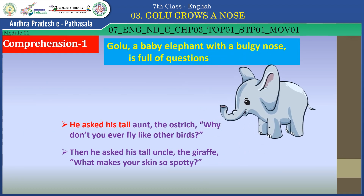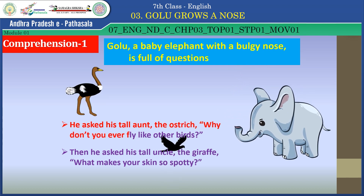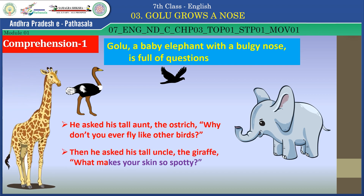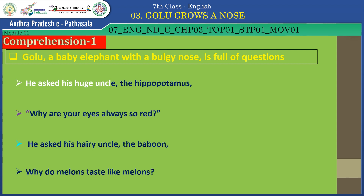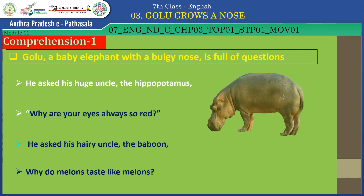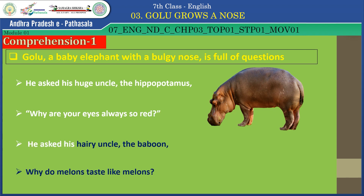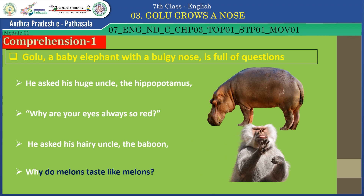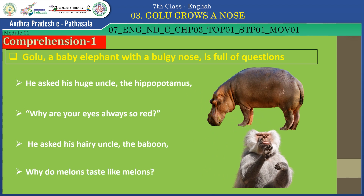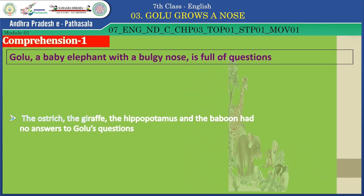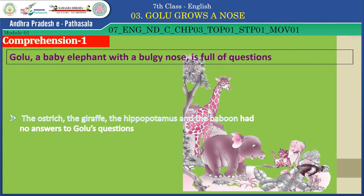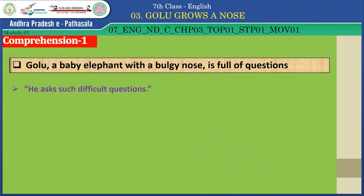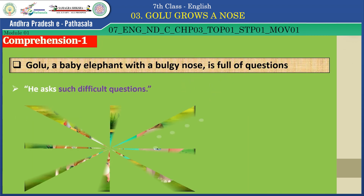He asked his tall aunt the ostrich, 'Why don't you ever fly like other birds?' Then he asked his tall uncle the giraffe, 'What makes your skin so spotty?' He asked his huge uncle the hippopotamus, 'Why are your eyes always so red?' He asked his hairy uncle the baboon, 'Why do melons taste like melons?' The ostrich, the giraffe, the hippopotamus, and the baboon had no answers to Golu's questions. They said, 'Golu is a naughty boy — he asks such difficult questions.'